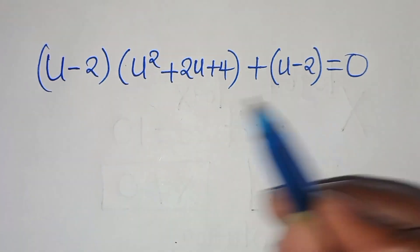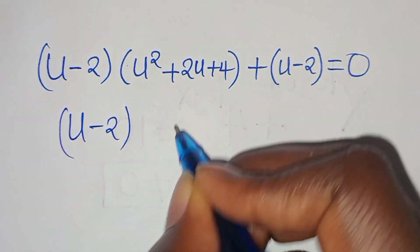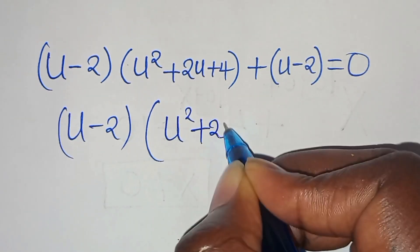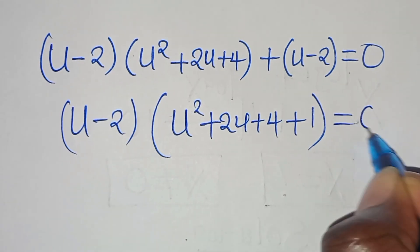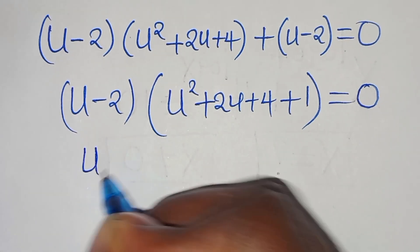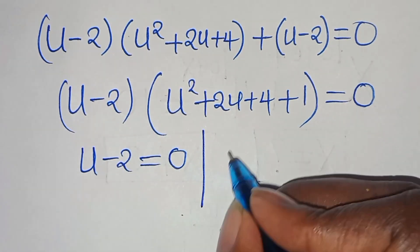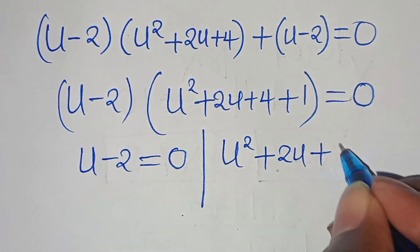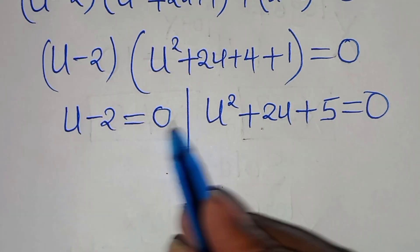Since (u minus 2) is common, we factor it out to get (u minus 2)(u² + 2u + 4 + 1) equals zero, which simplifies to (u minus 2)(u² + 2u + 5) equals zero. The first part gives u minus 2 equals zero, and the second part is u² + 2u + 5 equals zero.